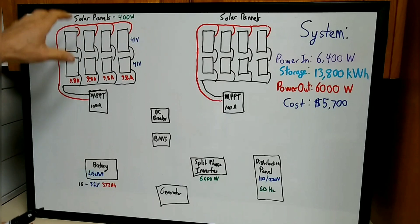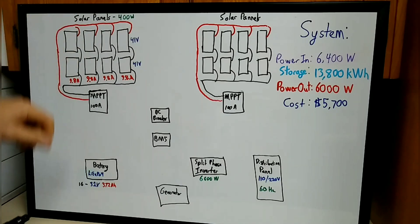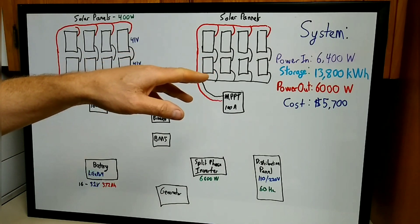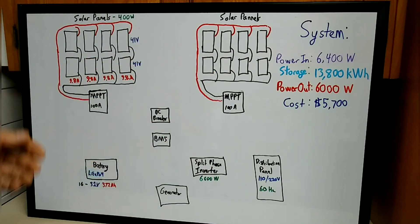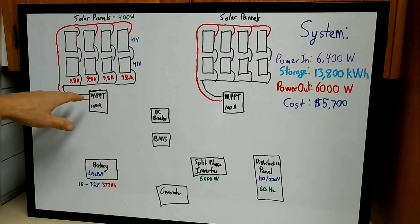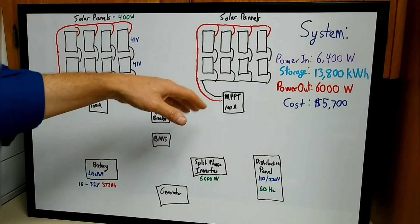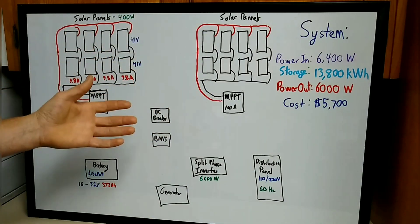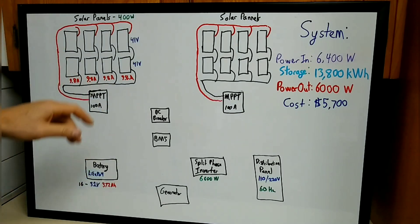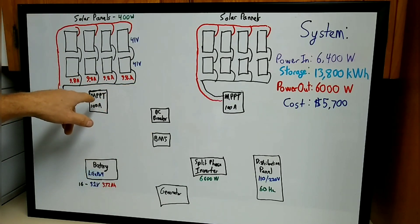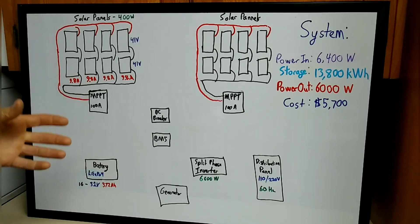I chose to split my system into two parts based on the size. It's a fairly large system and hard to find a controller that will handle 6,400 watts, so I broke it into two with two controllers. That also gives me redundancy. If one controller goes bad, I'd still have the other array, so I'd be on half power but still have some power. The loss of my MPPT controller won't totally knock me out.